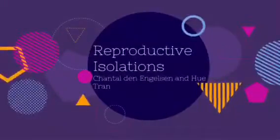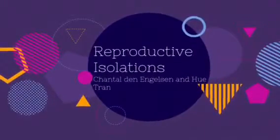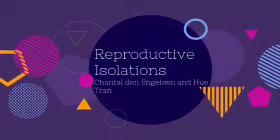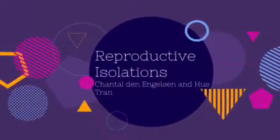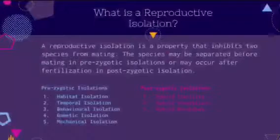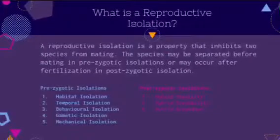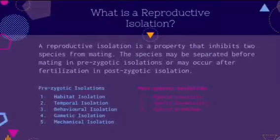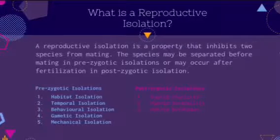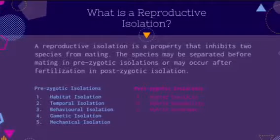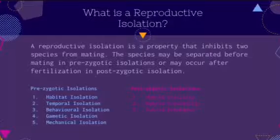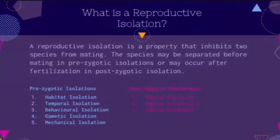Today we're going to talk about reproductive isolation. Reproductive isolation is a property that inhibits two species from mating. The species may be separated before mating in prezygotic isolation, or may occur after fertilization in postzygotic isolation.